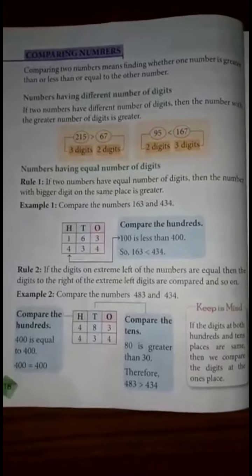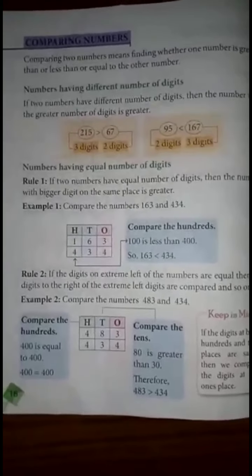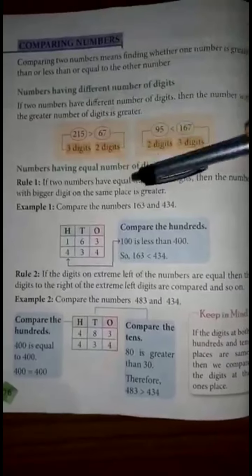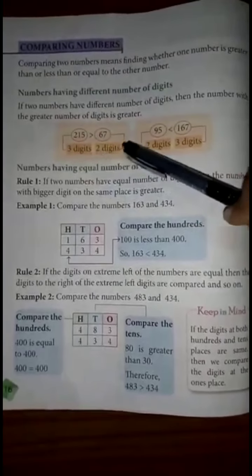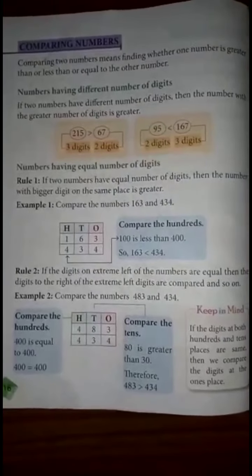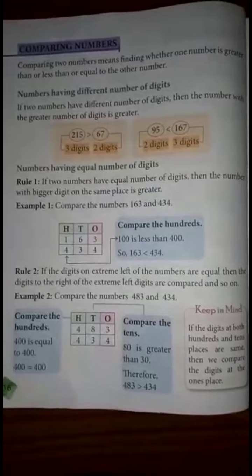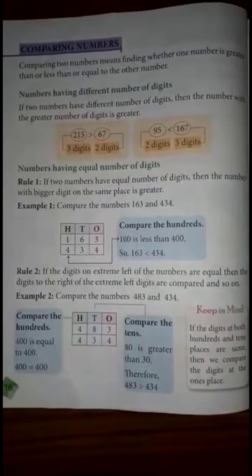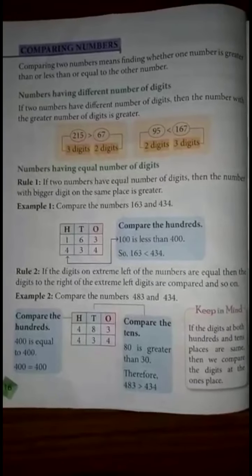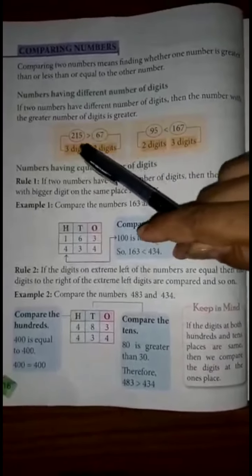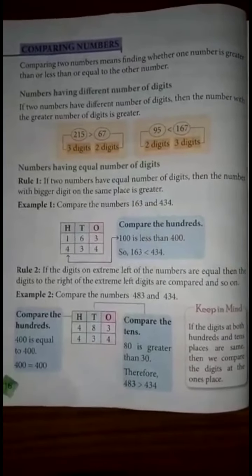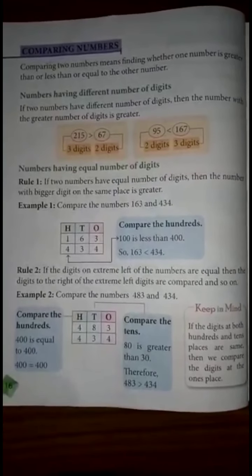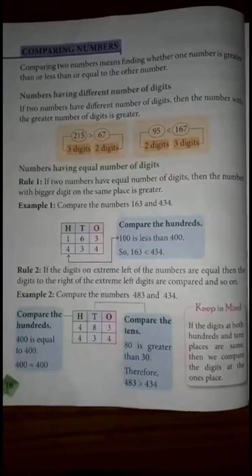For example, if we have a 3-digit number and a 2-digit number, how will we find which number is greater? The number with the greater number of digits is greater. So a 3-digit number is always greater than a 2-digit number.